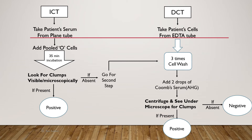Procedure for the Direct Coombs Test: the DCT is done from the patient's cells taken from an EDTA tube. Three washes of the cells are done, after which two drops of Coombs serum, also known as AHG, are added. Then after centrifugation, look under the microscope. If clumps are present, it indicates a positive Coombs test, seen in hemolytic conditions like autoimmune hemolytic anemia. If there are no clumps, it suggests a negative DCT.